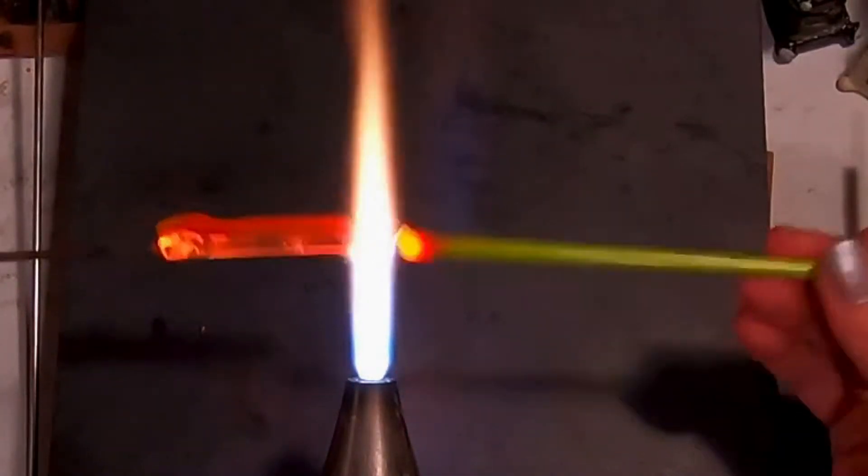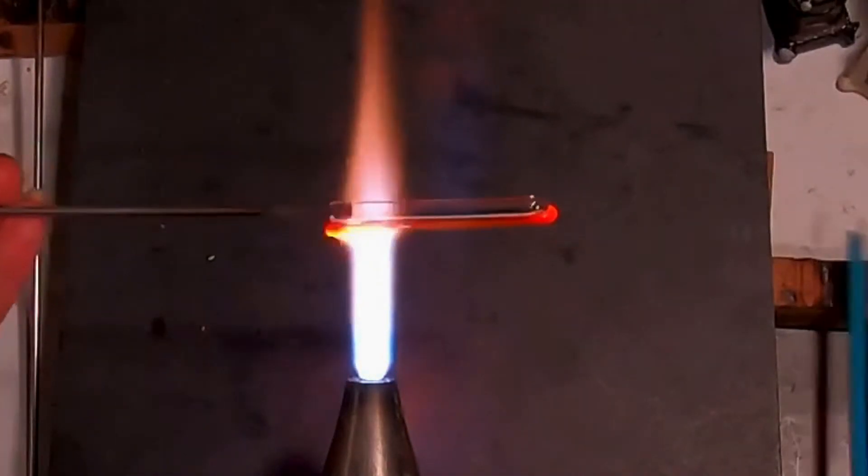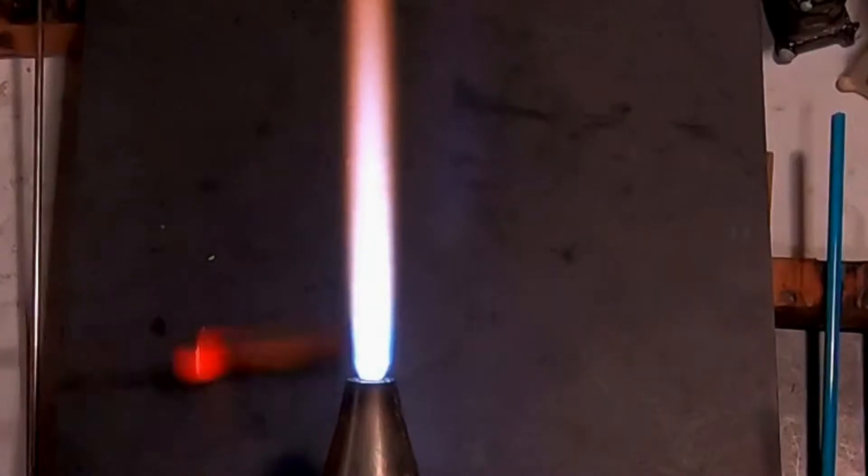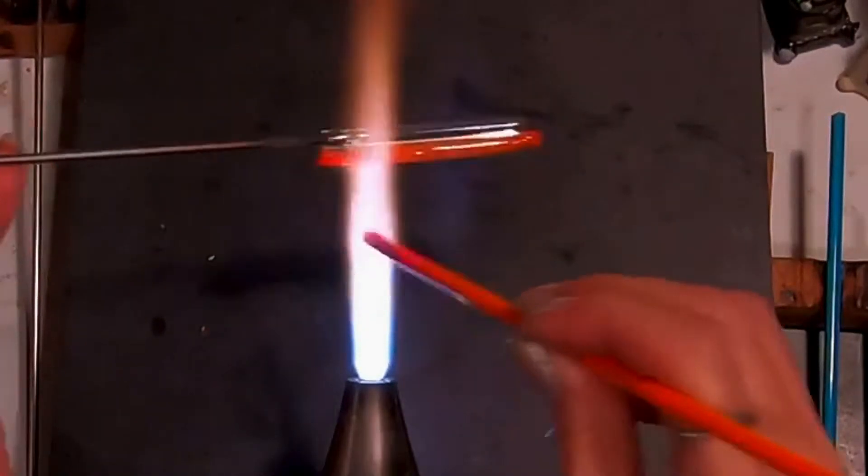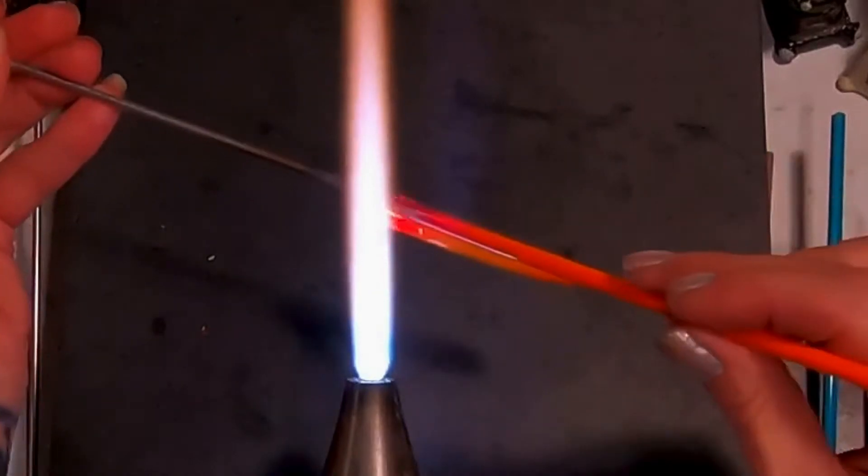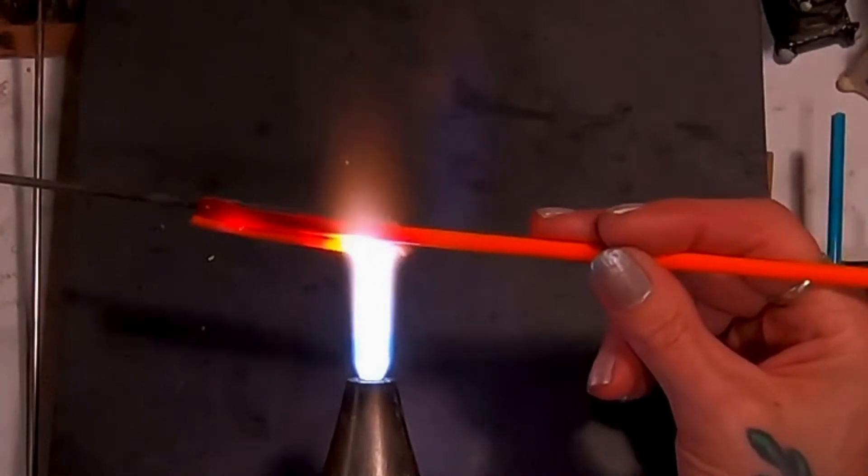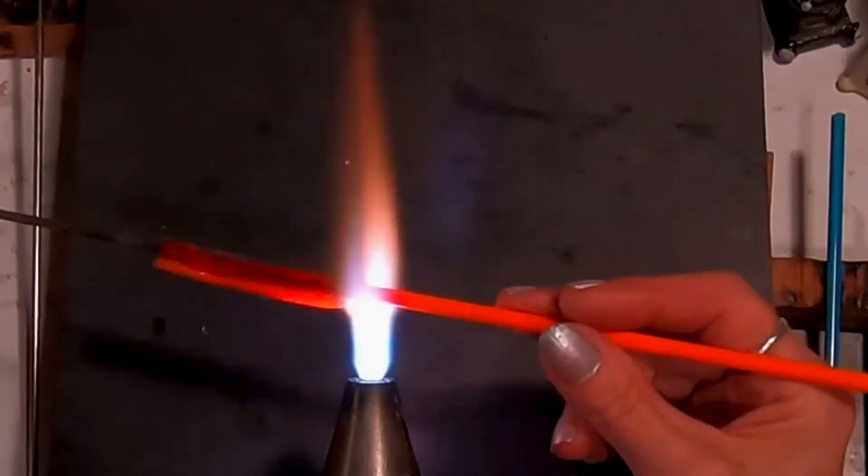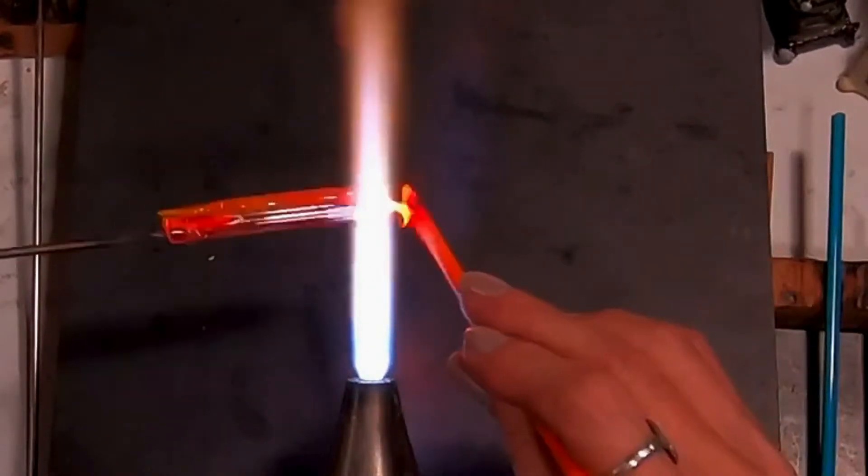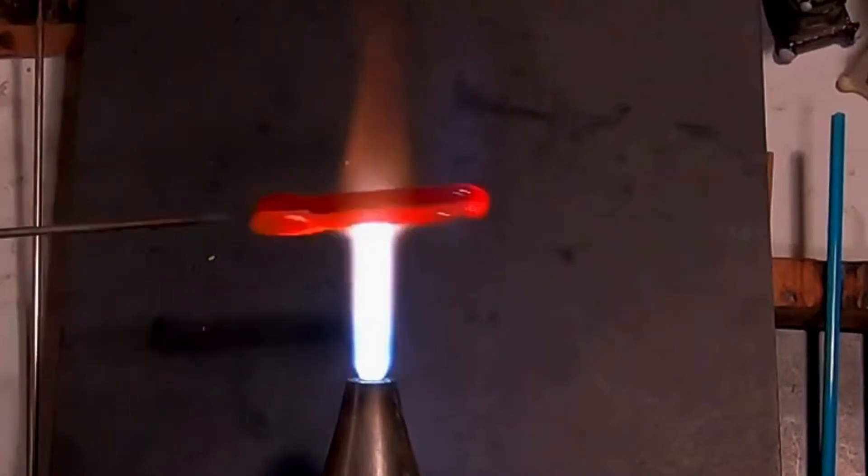Every time I pick up a new color, it's very slow, but it looks like I'm just going in and out of the flame really fast. It's very slow because what I'm doing is trying to heat up the same amount of cane that I want to lay down.